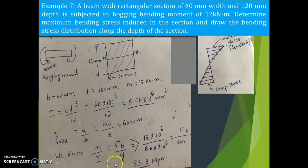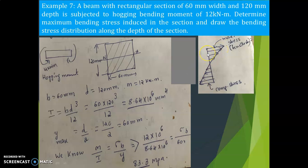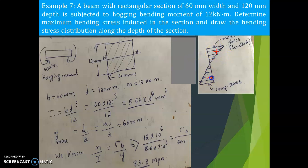Now let us draw the stress distribution diagram. Extend the neutral axis. Since this is a hogging moment, compressive stress is developed at the bottom fiber — it is negative, shown pointing to the left. Tensile stress is induced at the top layer — it is positive, shown pointing to the right. Use arrow marks to indicate this in the diagram.